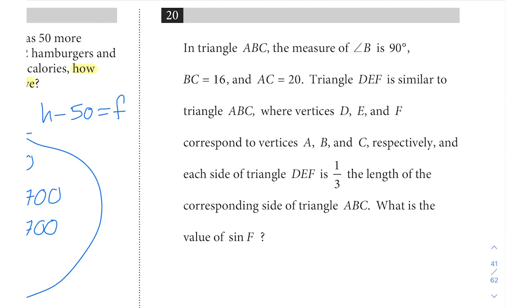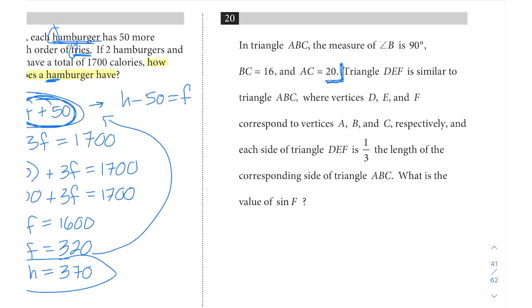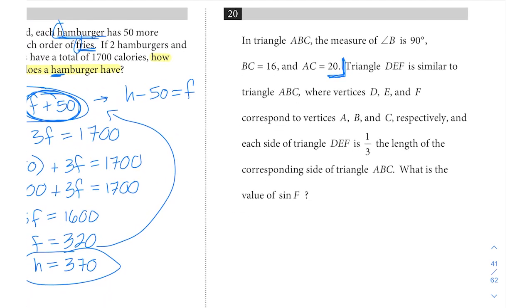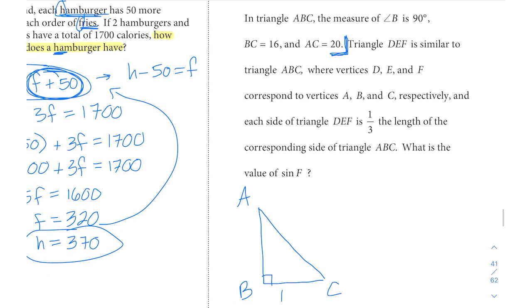Up next, question 20. In triangle ABC, the measure of angle B is 90 degrees, BC is 16, AC is 20. Whoa, that's a lot of information. When you see a question that gives you a lot of information, instead of continuing to read on, it's sometimes helpful to start depicting that information in a clearer fashion. So here we have a triangle. Angle B is 90 degrees, so we'll label that B. Triangle is ABC. BC is 16, AC is 20.